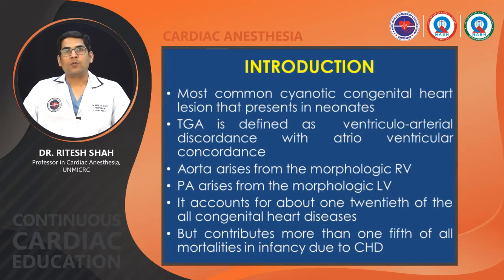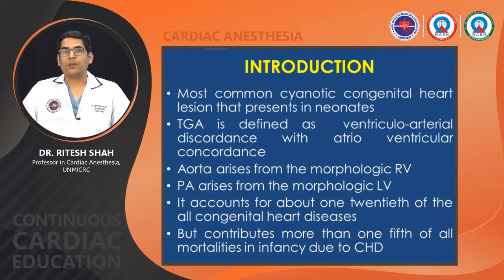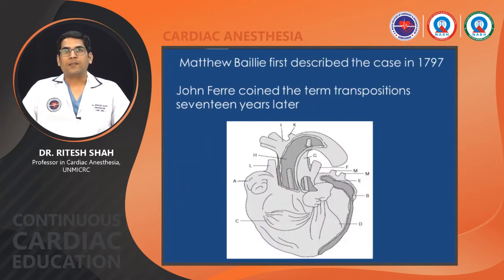Transposition of the great arteries is the most common cyanotic congenital heart lesion presenting in the neonatal age. It is defined as ventricular-arterial discordance along with atrioventricular concordance. The aorta arises from the morphologic right ventricle and pulmonary artery arises from the morphological left ventricle. It accounts for about 1/20th of all congenital heart diseases but contributes more than one-fifth of all mortalities in the infant age due to congenital heart disease. Matthew Bailey first described the case of TGA in 1797, and John Ferrer later coined the term transposition.